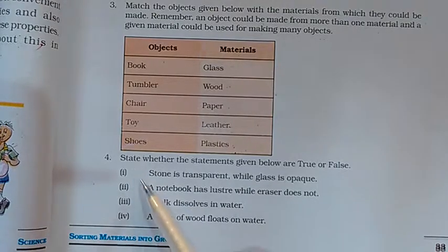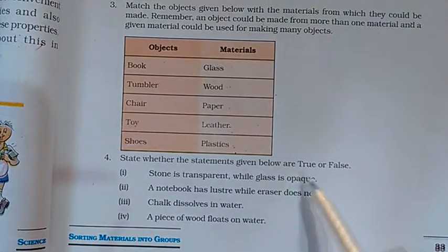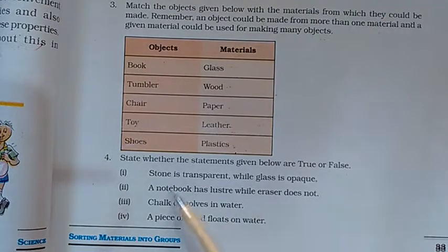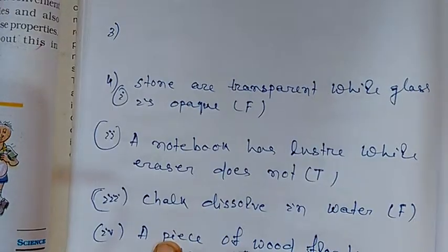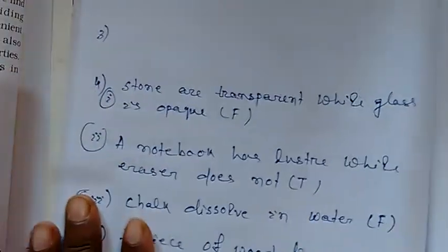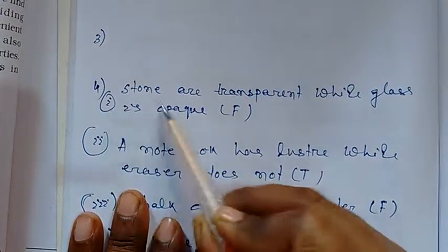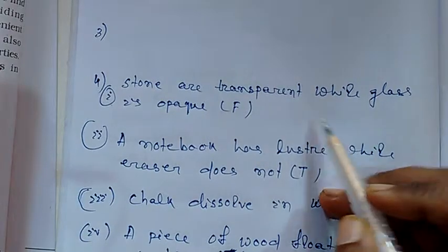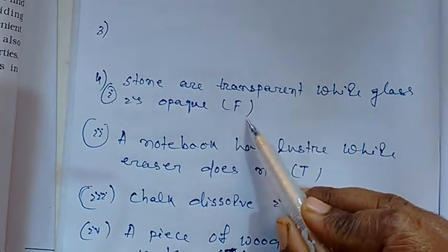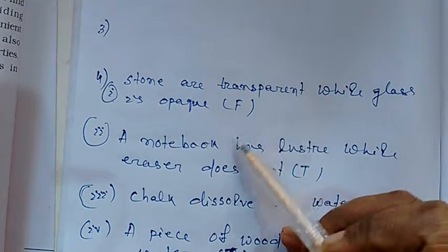Next, question number 4. State the following statements as true or false. Statement 1: stones are transparent while glass is opaque. This is false. Glass is transparent and stones are opaque.